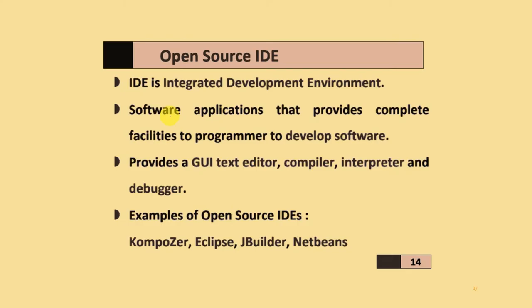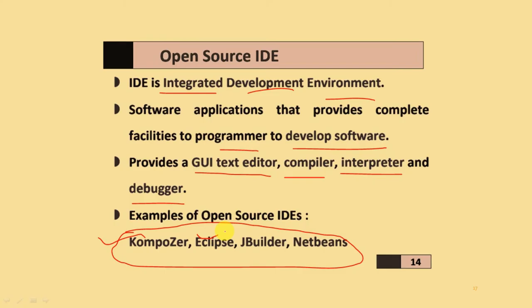An open source IDE (Integrated Development Environment) is a software application that provides complete facilities to the programmer to develop different types of software. It provides a graphical user interface, text editors, compilers, interpreters, and debuggers. Some examples of open source IDEs are Composer, Eclipse, JBuilder, and NetBeans.